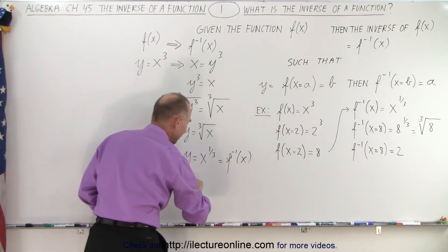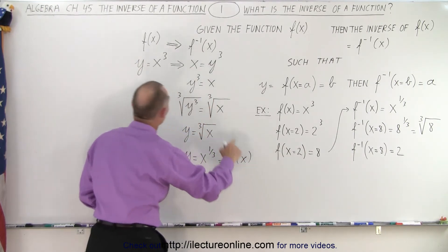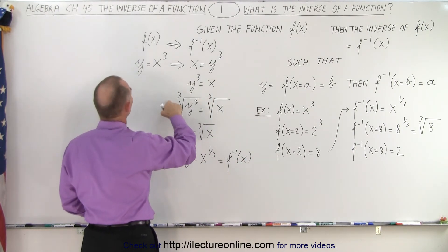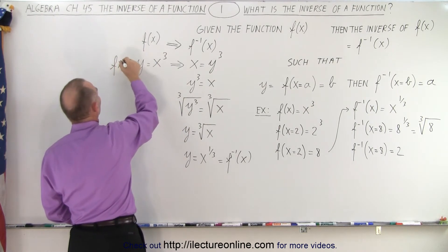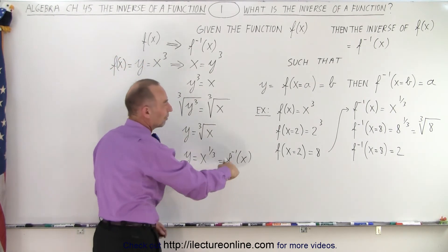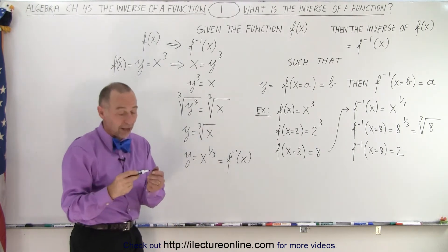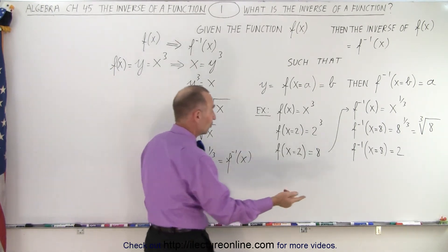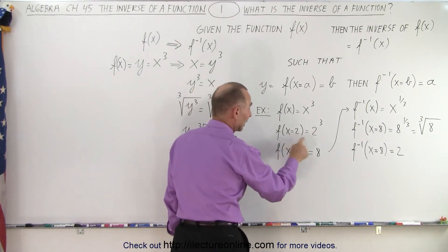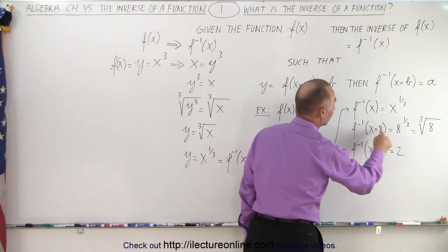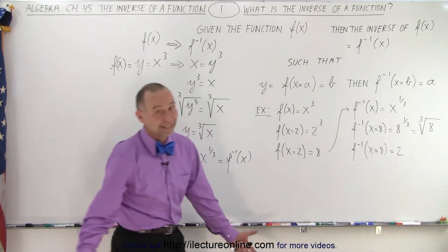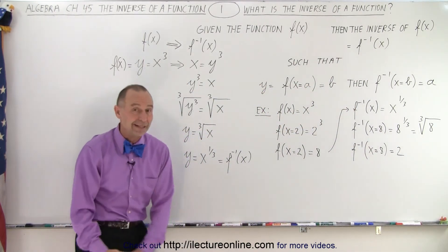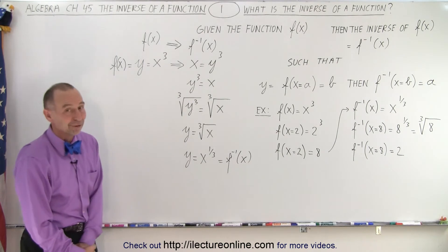So this here is the inverse of our original function — this is f to the negative 1 of x. Our original function f of x was equal to x cubed, and there's the inverse. When we get the inverse, all we have to do is plug in a number, get a value, take that value, plug it into the inverse, and we get the original number back. That's what we mean by the inverse of a function.